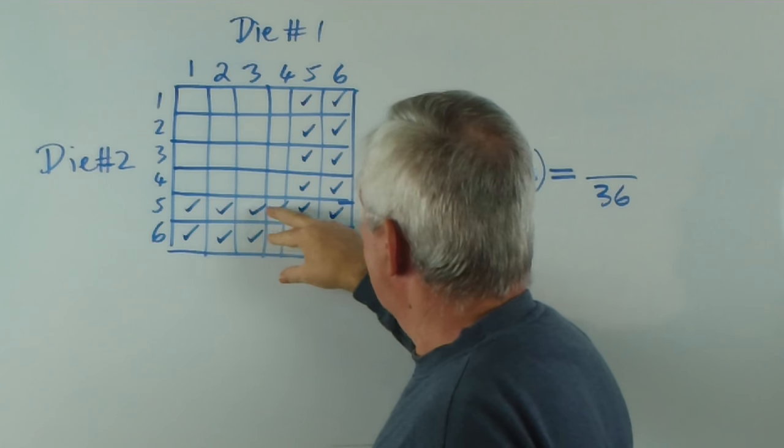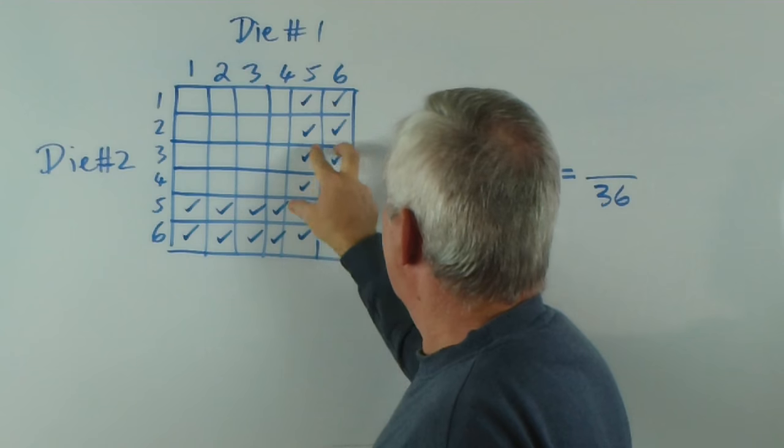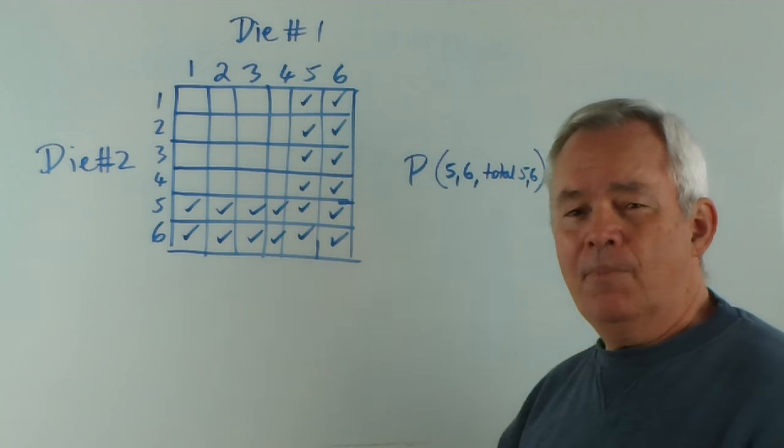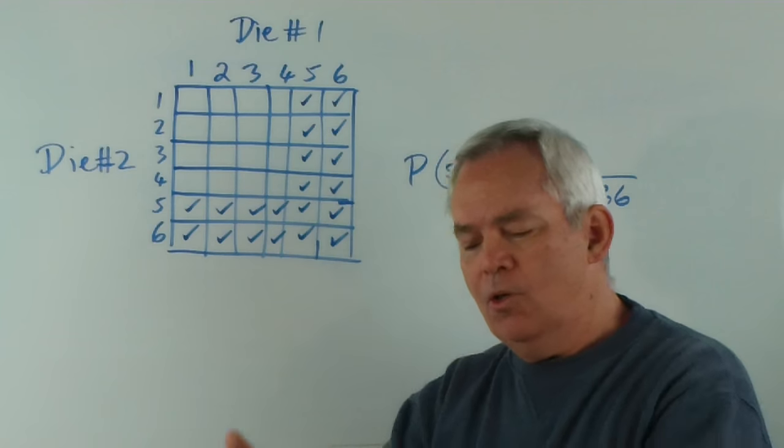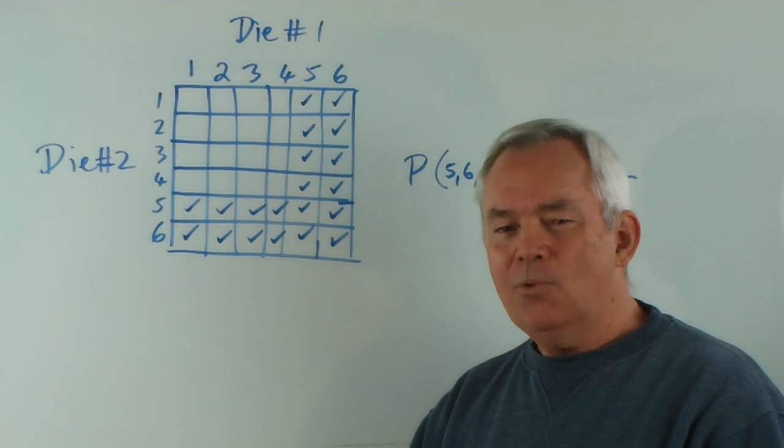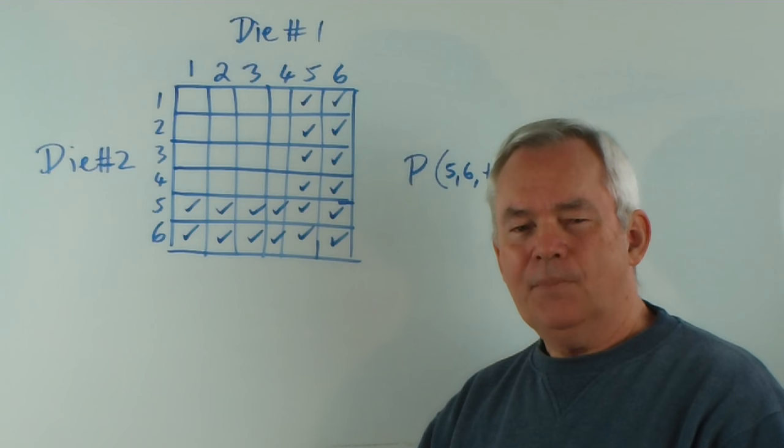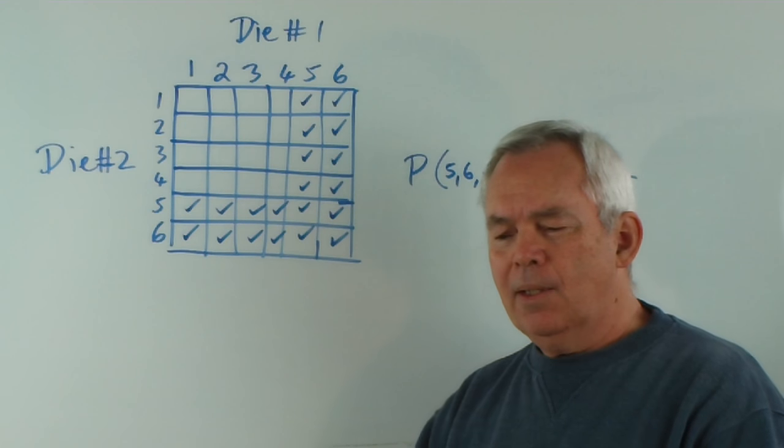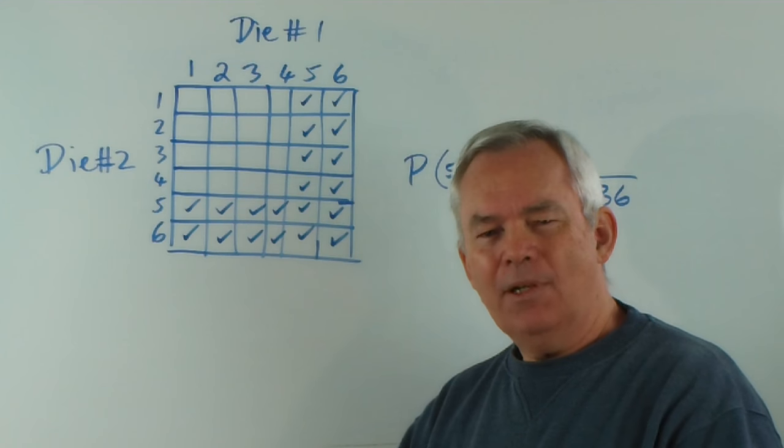In fact, if we count them up, two, four, six, eight, ten, twelve, fourteen, sixteen, eighteen, twenty, that's more than half. So, more than half the time that you roll a pair of dice, you'll get at least one five or one six, on average. That's extraordinary. At least half the time.